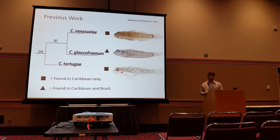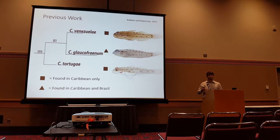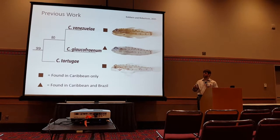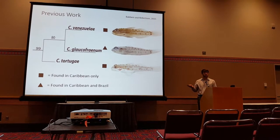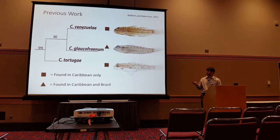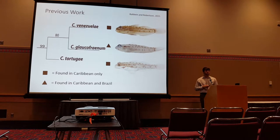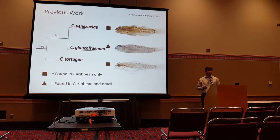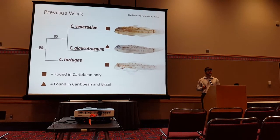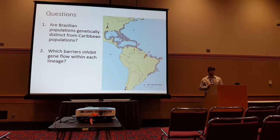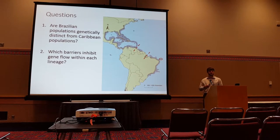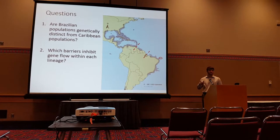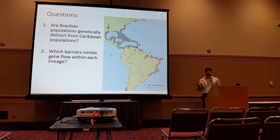Some previous work on this taxon had all three of these morphs as one species that was widely distributed. However, using both morphological and genetic data, they have been defined as three distinct species that all co-occur in the Caribbean. The only one that extends further down to Brazil is Coriopopterus vacafranum. Because most of the work has been done exclusively in the Caribbean, it has left the Brazilian populations entirely uncharacterized, which leads me to my first question: are Brazilian populations genetically distinct from Caribbean populations? My second question is which minor barriers inhibit gene flow within each province.